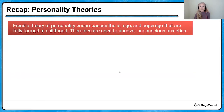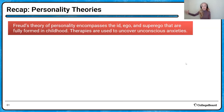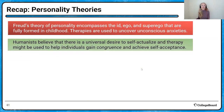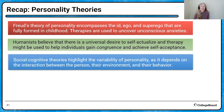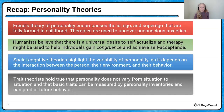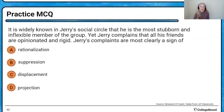To recap our personality theories: Freud's theory encompasses the id, ego, and superego — fully formed by about age seven — and you can use hypnosis, free association, and projective testing to uncover unconscious anxieties. Humanists believe there's a universal desire to self-actualize, and therapy can help individuals gain congruence. Social cognitive theories highlight the variability of personality, while trait theories say there's no variability.